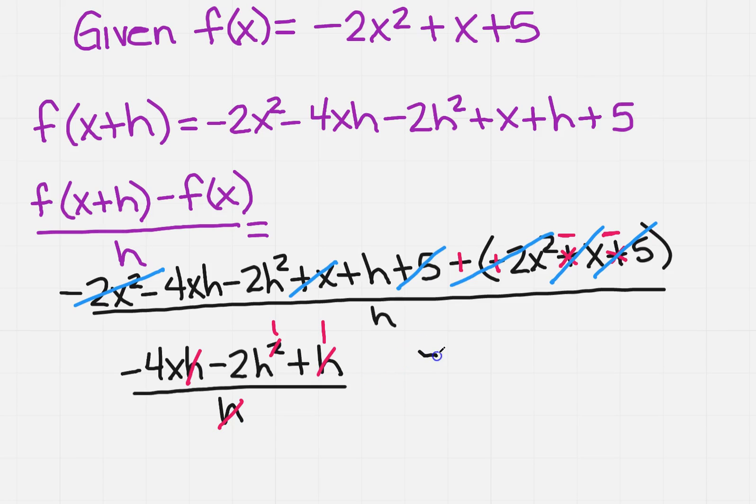So now I'm going to have minus 4x minus 2h plus 1. Now, remember we did have this h over here on the bottom, so don't forget to write that h cannot equal 0.